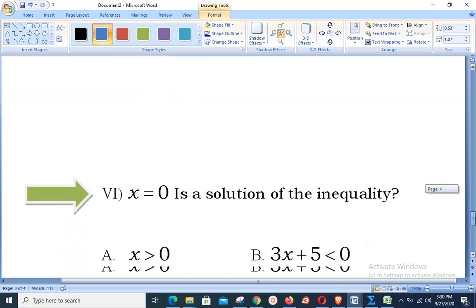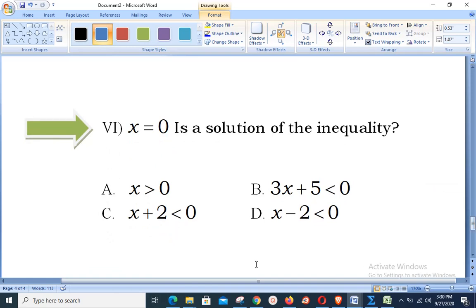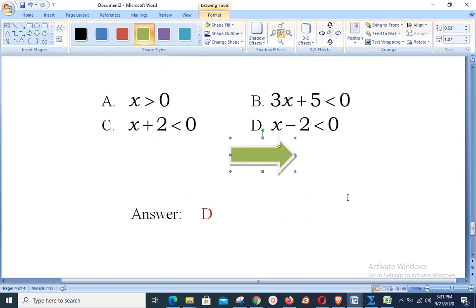Going for the next, last objective: if x is equal to 0 is a solution of the inequality, you will put in place of x equal to 0 and you will check what is your correct answer. It will be valid only for option D. 0 minus 2 will provide you less than 0. That means option D is the correct answer.